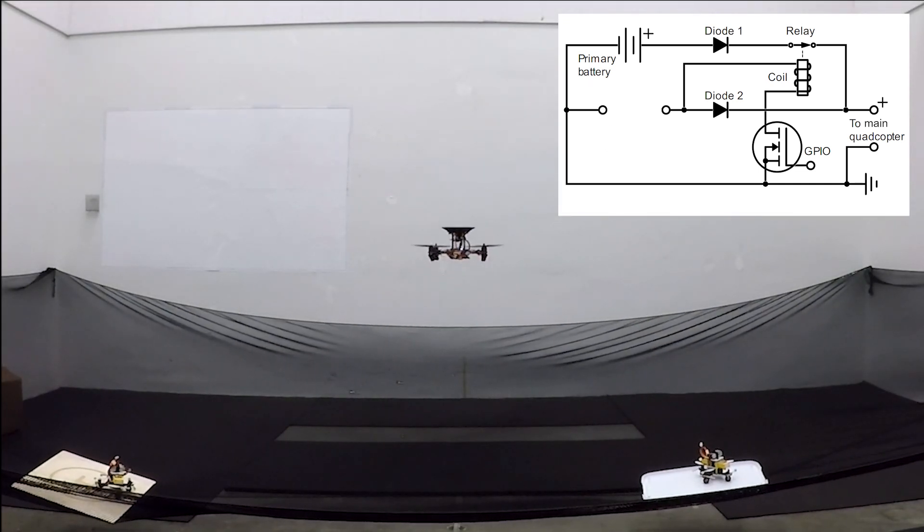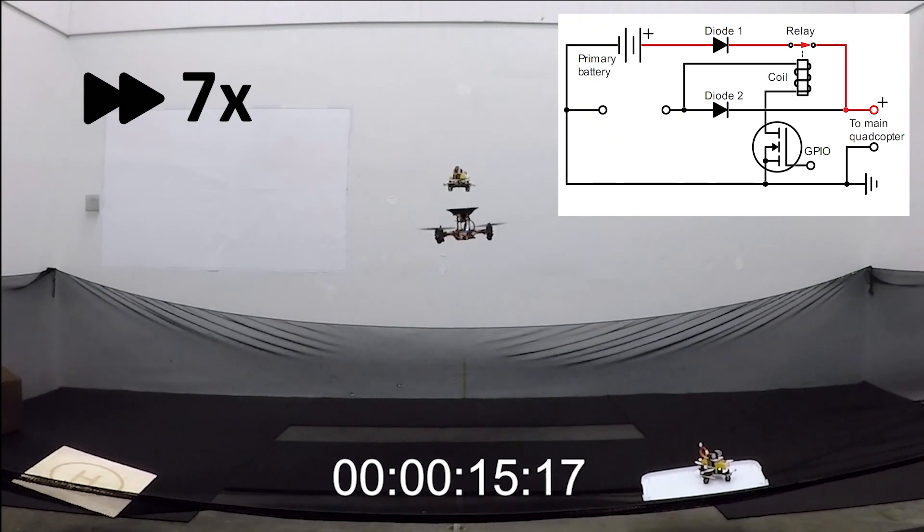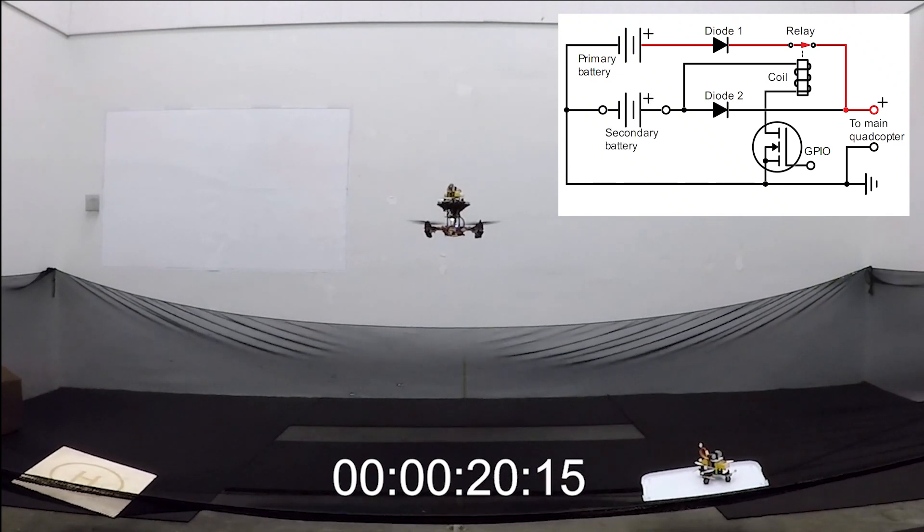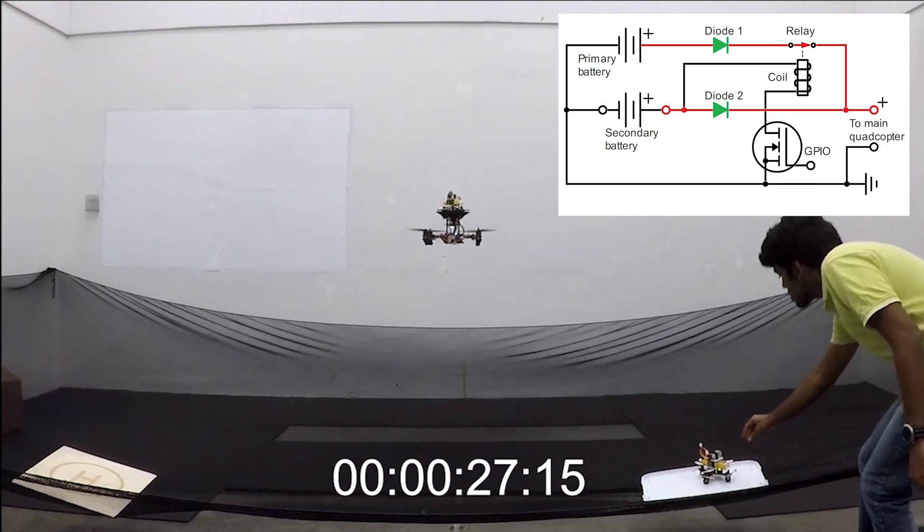The flight begins with the main quadcopter hovering using a primary battery. Once the flying battery docks, the secondary battery is connected to the circuit. The two batteries are now connected in parallel. The diodes prevent any backflow of current due to a voltage difference between the batteries.